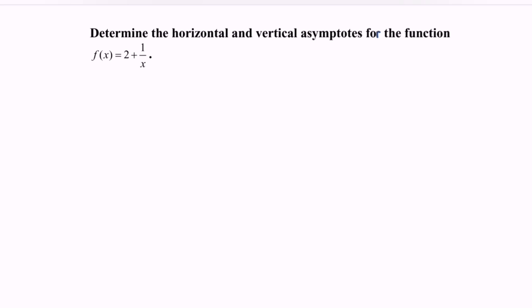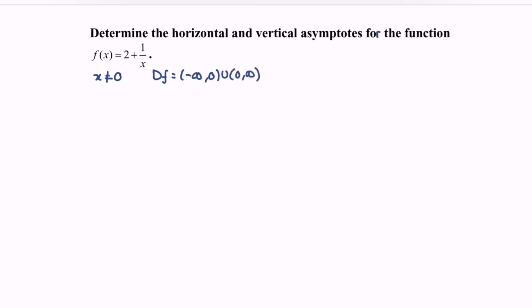So first, we are going to find the vertical asymptote. Kindly refer to the denominator where we have x. So the domain will be x cannot be equal to 0, or the domain for f is equal to negative infinity until 0 union 0 until infinity, where 0 is not included.